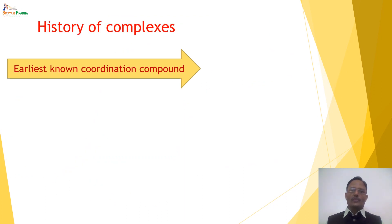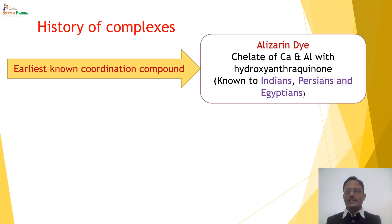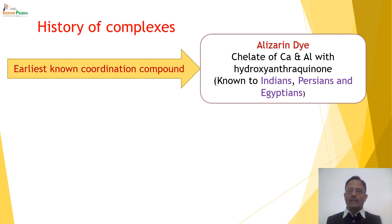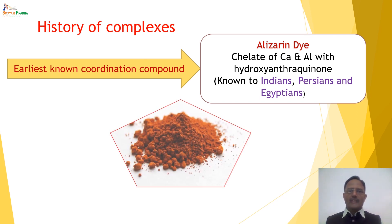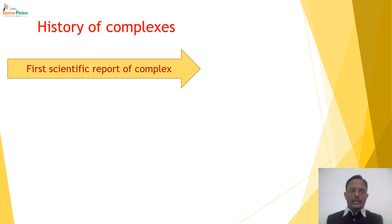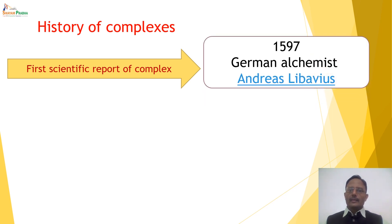Starting with the history of complexes. The earliest known coordination compound, known to Indians, Persians, and Egyptians, was Alizarin dye. It is basically a chelate of calcium and aluminium with a ligand known as hydroxy anthraquinone. This dye is a beautiful brownish-red coloured compound — basically a complex — and it was known to Indians since the 10th century.